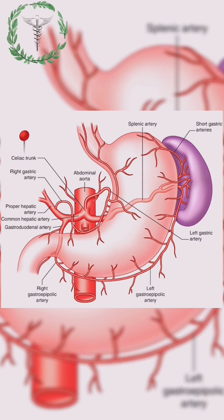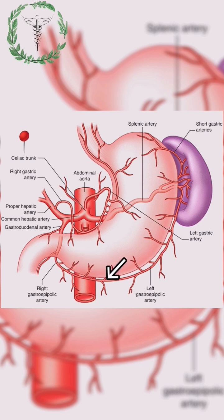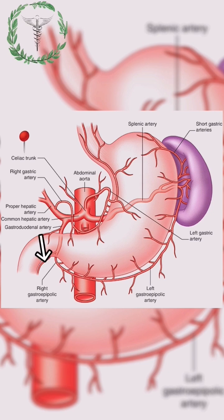The right hepatic artery gives off the cystic artery. We also have the gastroduodenal artery, which is further divided into the right gastroepiploic artery, supplying the lower part of the greater curvature. And lastly, the superior pancreaticoduodenal artery, supplying the second part of the duodenum and head.